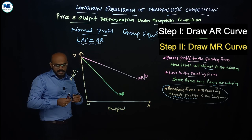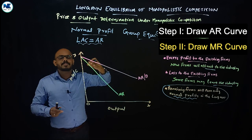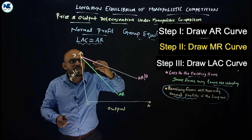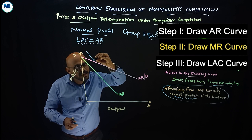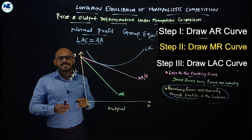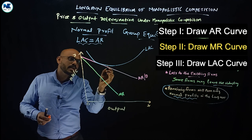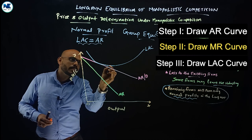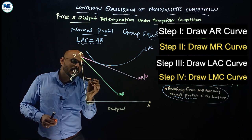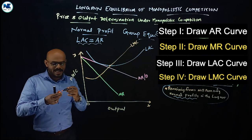Then we draw long run average cost. The long run average cost curve is tangent to the demand curve or average revenue curve. This is the long run average cost. The short run average cost passes through a different area. Below the minimum point of the long run average cost, the long run marginal cost curve cuts through it.